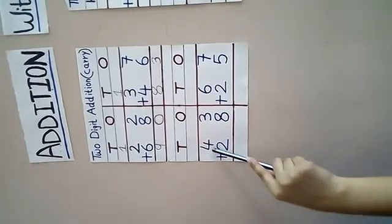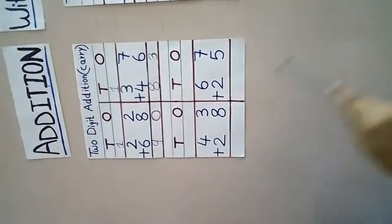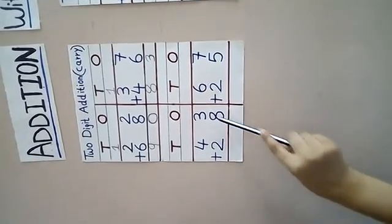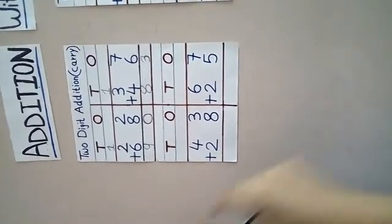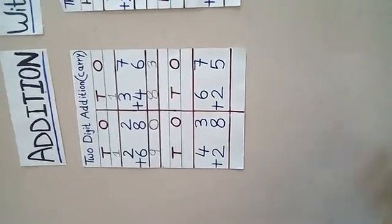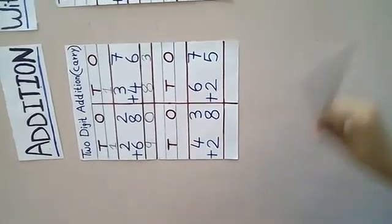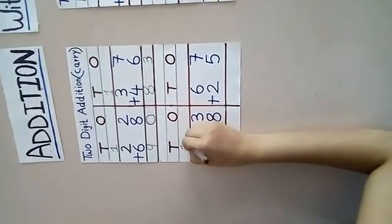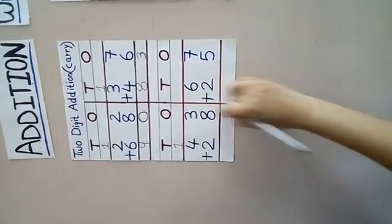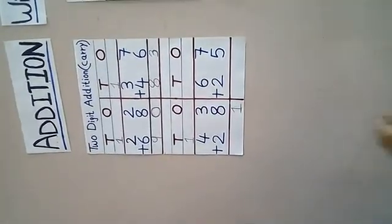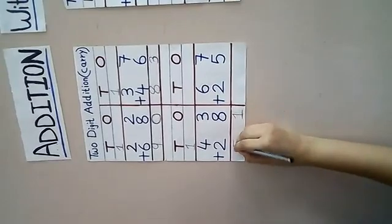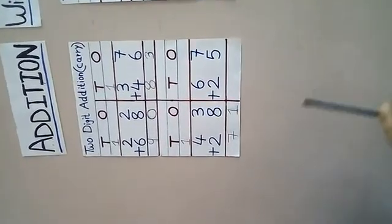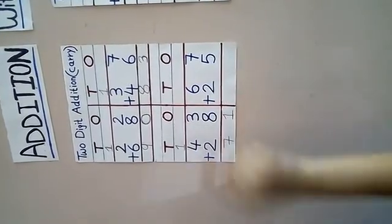Now, see third one: 43 and 28. We have to add them. And we have to start from 1's. Now see, which is the bigger one? 8. Keep 8 in the mind and then add: 9, 10 and 11. 11 means 1 10's and 1 1's. So 1 10's will be carried forward to 10's and 1 1's will be kept in the 1's column. Now, 4 in the mind and then add 1, 5. And then add 2, 6 and 7. So we got 7. Means 7 10's and 1 1's.